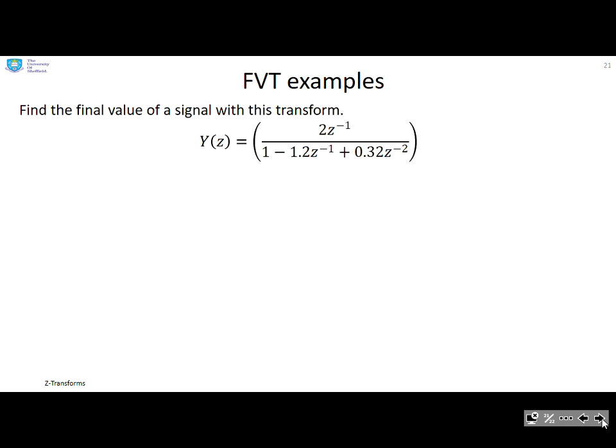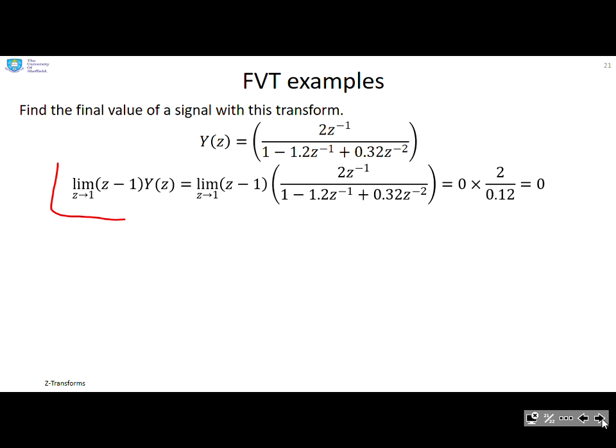Here's an example. Find the final value of the signal with this transform. All I do is plug in the final value theorem. I do the limit as z tends to 1 of (z minus 1) times Y of z. As z goes to 1, then z minus 1 is going to go to 0. I'm going to end up with 0 times 2 over 0.12 equals 0. You can see this transform does not have a pole at 1, and so by inspection, the limit is going to be 0.